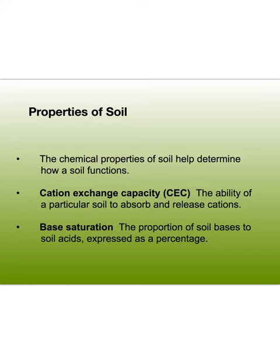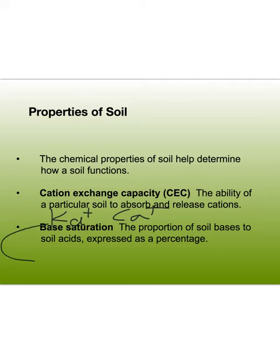Chemical properties of soil help determine how soil functions. Cation exchange capacity is the ability to absorb and release cations — your group one elements like potassium, calcium, etc. Base saturation is the proportion of soil bases to soil acids expressed as a percentage. The higher the percentage of basic compounds relative to acids, the better the soil resists changes in acidity, which can otherwise damage plant life. The bases serve as a buffer.